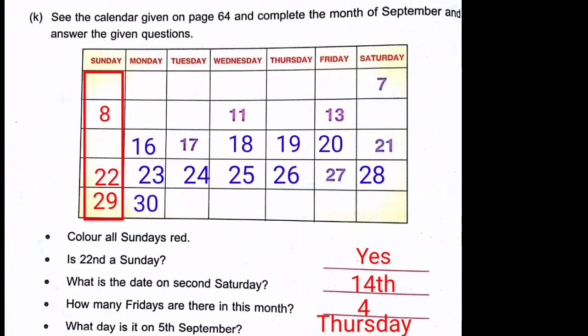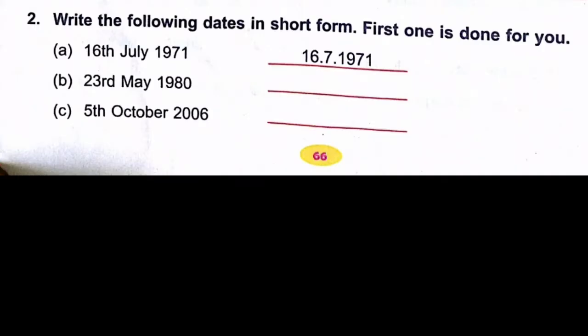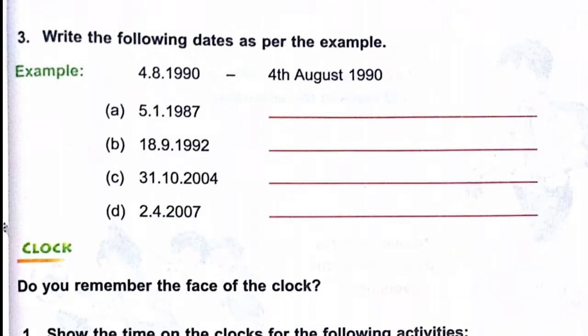Question number 2: Write the following dates in short form. For example, 16 July 1970 is written as 16/7/1970. Similarly, write 23/5/1980 and 5/10/2016 in the same format.